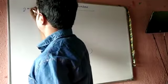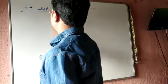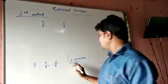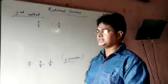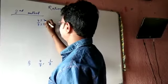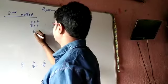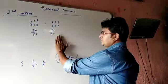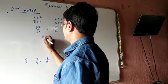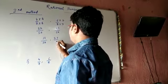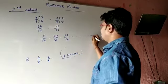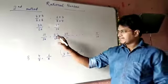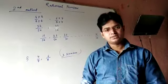The second method is the fraction method. First, take the LCM of seven and eight, which is 56. So four by seven becomes 32 by 56, and six by eight becomes 42 by 56. Between 32 and 42, you can insert any number of rational numbers: 33 by 56, 34 by 56, 35 by 56, and so on up to 41 by 56. If you need three, four, or five numbers, this method is very easy.